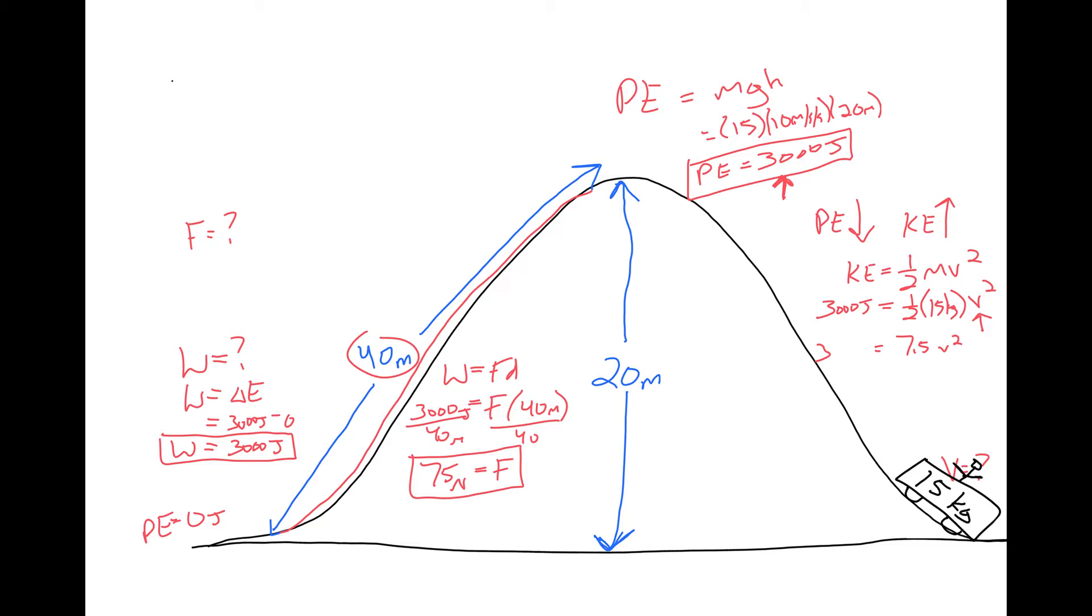So that would be 7.5 times velocity squared, still equal to 3,000. Divide both sides by 7.5. It gives me velocity squared equal to 400.